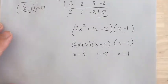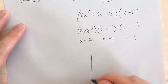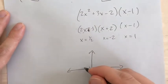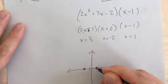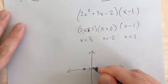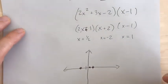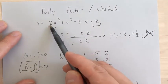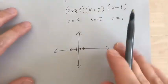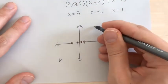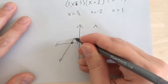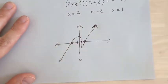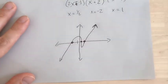Now if I wanted to sketch it, I could go ahead and do that as well. I write down the x-intercepts: negative 2, 1 half, and 1. My degree for this is 3, so that's odd. With a positive leading coefficient, my left arrow would be down and my right arrow is up. From there, I can connect the arrows, and that would be a sketch of that polynomial.